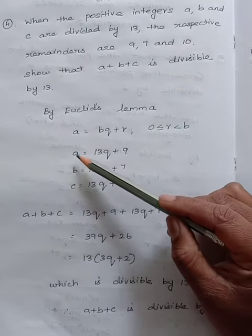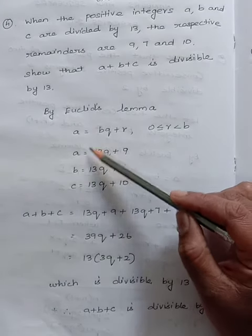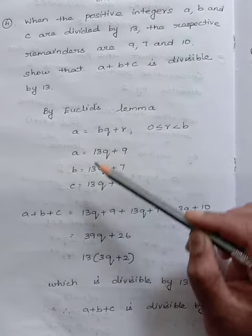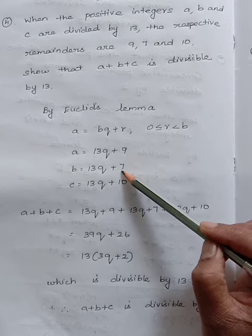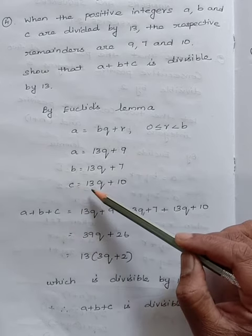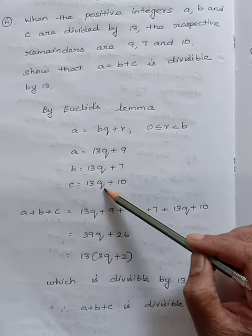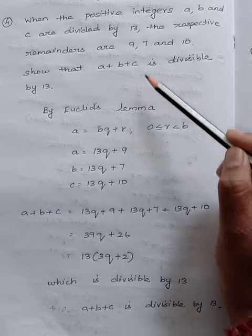It is given that when a is divided by 13, it leaves remainder 9. When b is divided by 13, the remainder is 7, and when c is divided by 13, the remainder is 10.